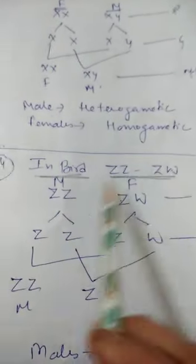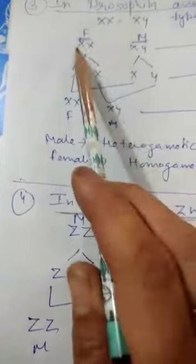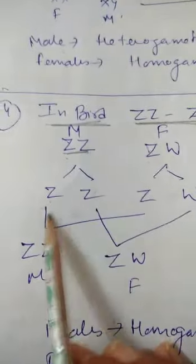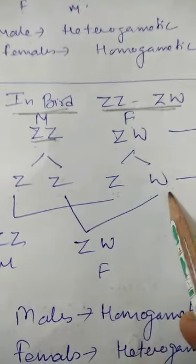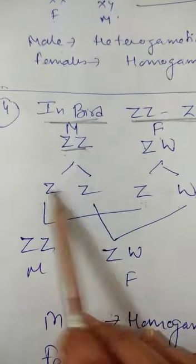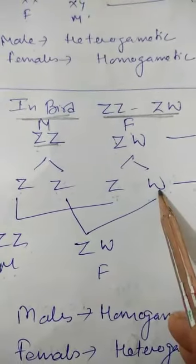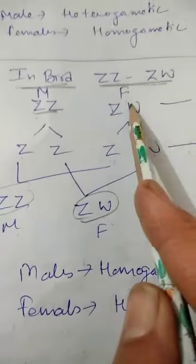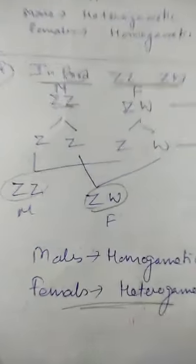Sex determination in birds is the ZZ/ZW type, which is the reverse of the XX/XY system. Here males are ZZ (homogametic) and females are ZW (heterogametic). Females produce 50% Z-bearing and 50% W-bearing gametes. When a Z-bearing sperm fertilizes a Z egg, ZZ males form; when it fertilizes a W egg, ZW females form. So in birds, females are heterogametic and males are homogametic — opposite to humans and Drosophila.